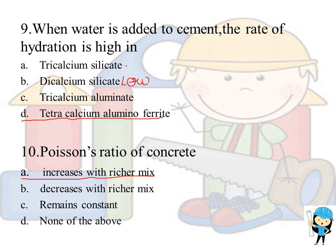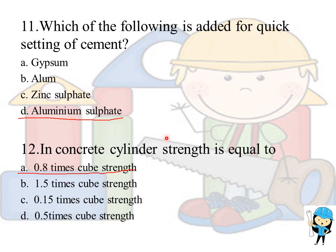The Poisson's ratio of concrete increases with a richer mix. Which of the following is added for the quick setting of cement? The answer is aluminium sulphate. We already know that gypsum is used as a retardant.